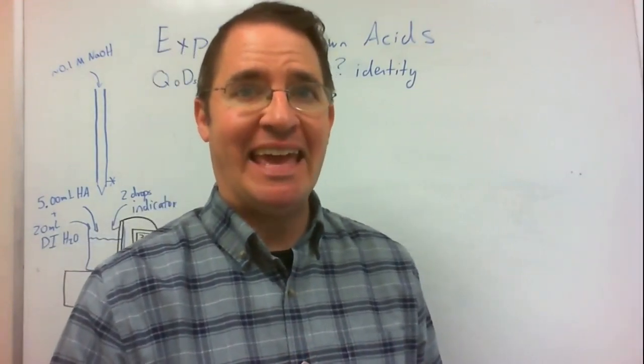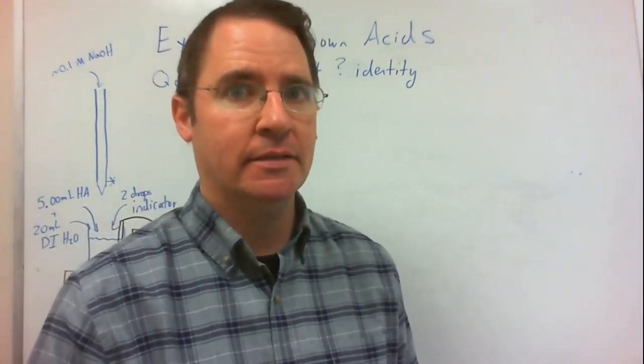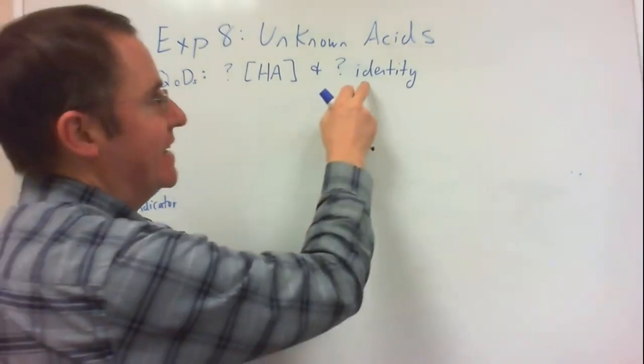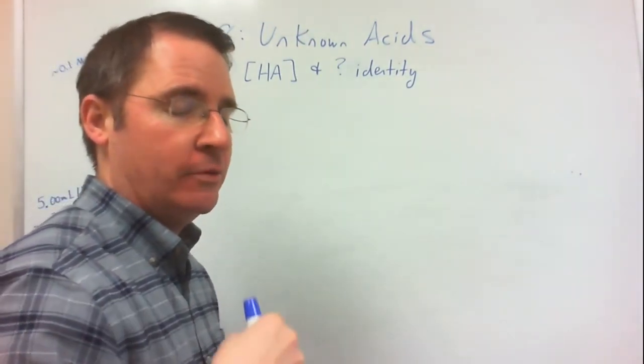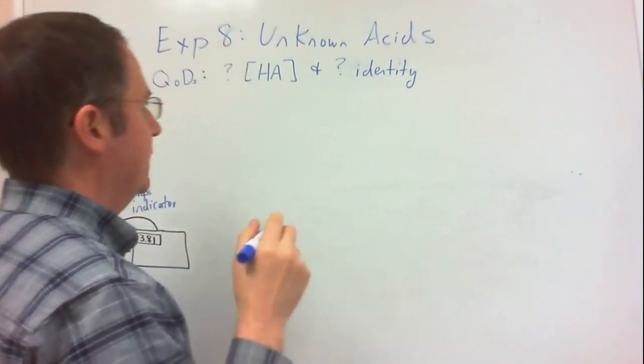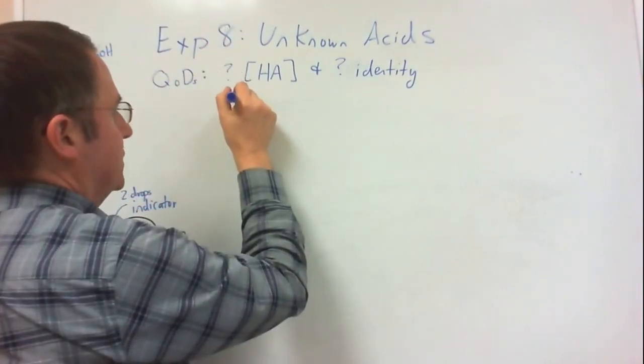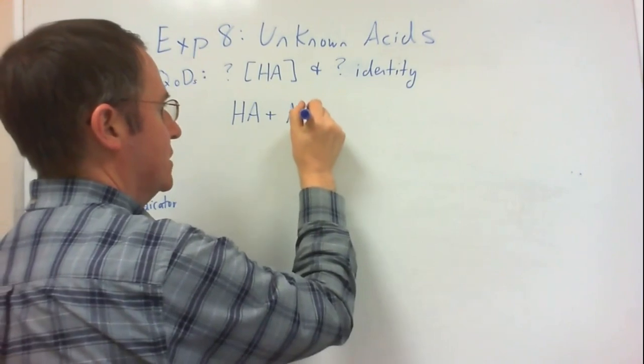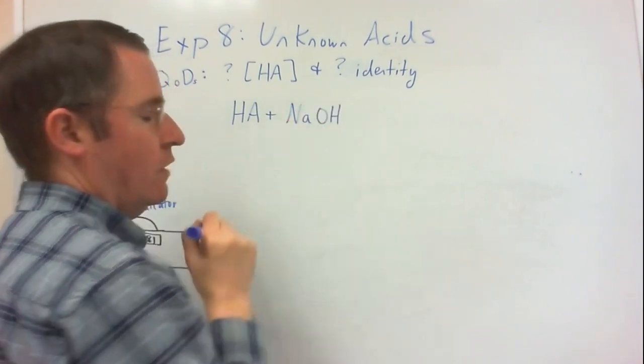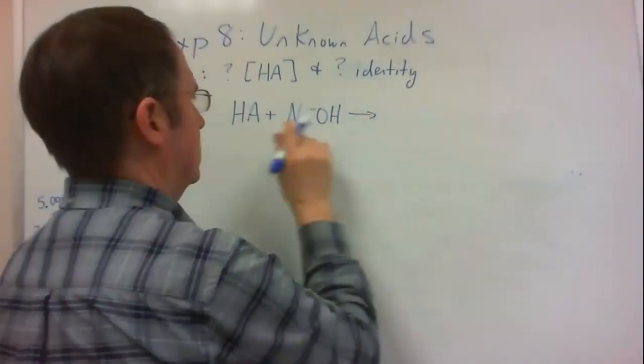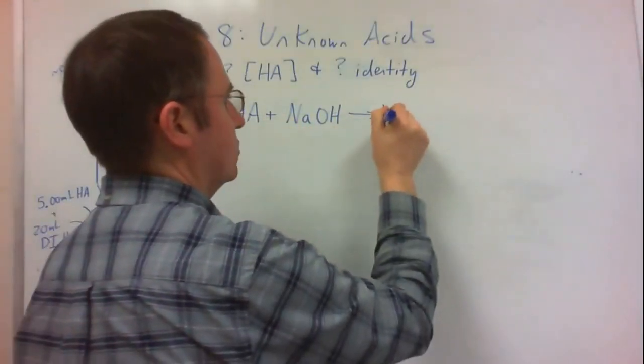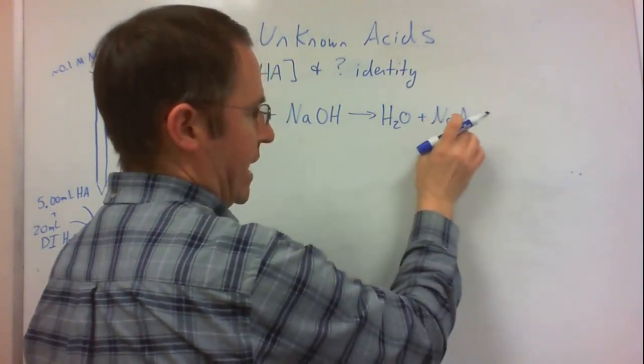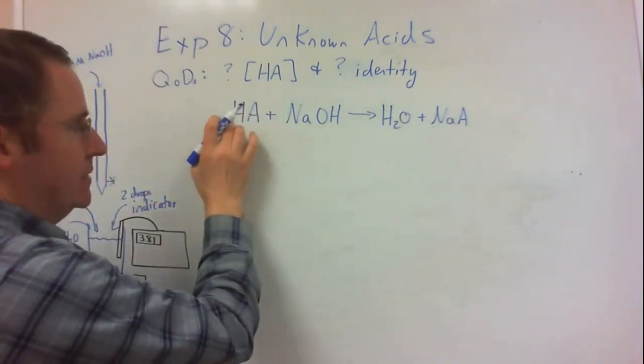This week we'll be doing Experiment 8, Unknown Acids, and our twofold objectives are to determine both the concentration and the identity of this weak acid. We'll actually be able to accomplish both those objectives with just one experiment. An experiment is to carefully react our unknown weak acid with a known substance, strong base, in a known way. So weak acid plus strong base produces water and a salt, represented as NaA, A being the conjugate base of our weak acid.